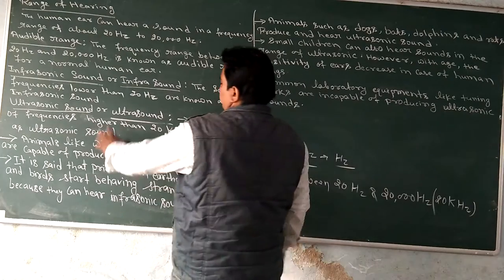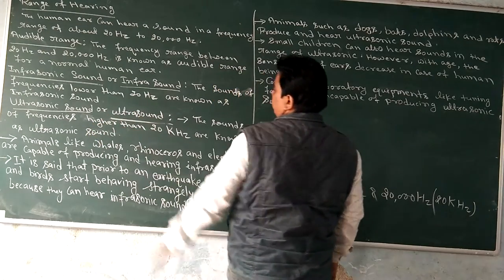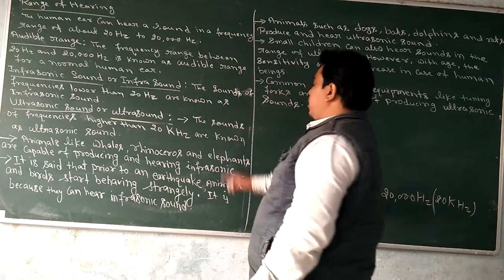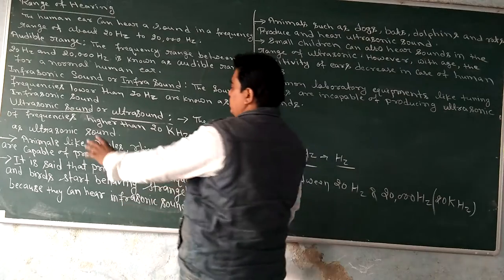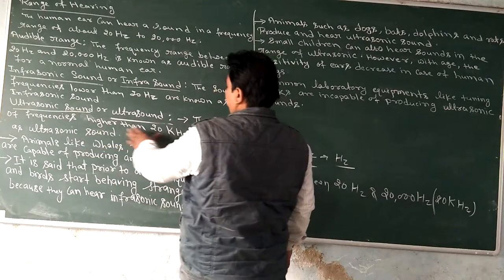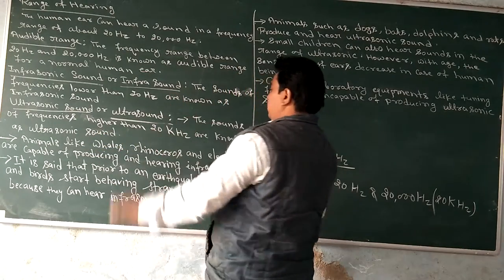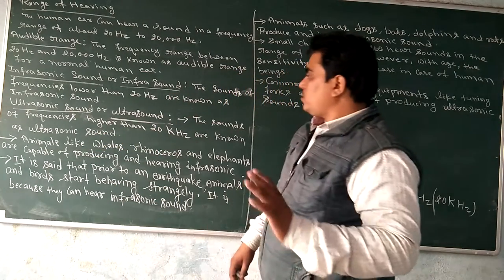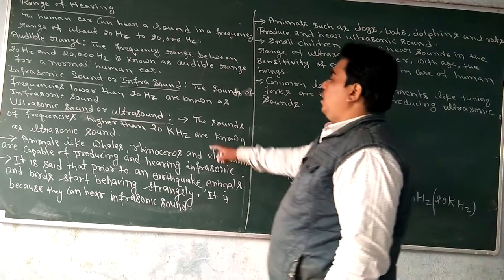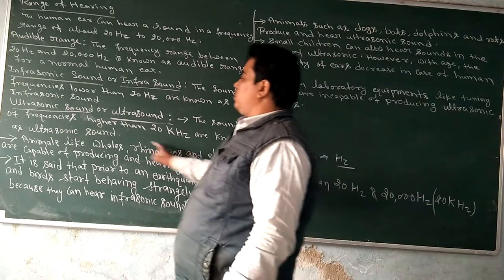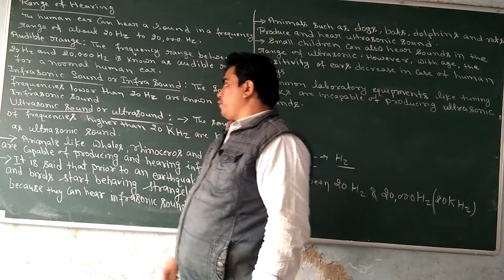Ultrasonic sound. The sound of frequencies higher than 20 kilohertz — that means more than 20,000 Hz — are known as ultrasonic sound.